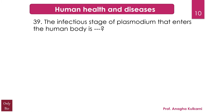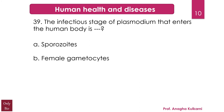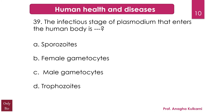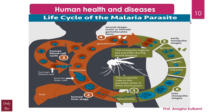The next question relates to Human Health and Diseases. The infectious stage of Plasmodium that enters the human body is — options: A) sporozoites, B) female gametocytes, C) male gametocytes, D) trophozoites. The correct answer is A — sporozoites. During a blood meal, a malaria-infected female Anopheles mosquito inoculates sporozoites into the human host, which infect liver cells and mature into schizonts, which rupture and release merozoites.